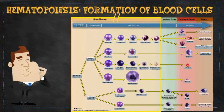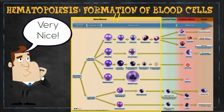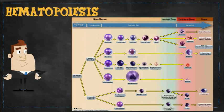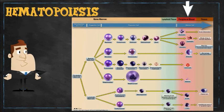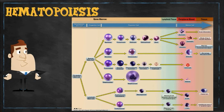All hematopoiesis starts in the bone marrow, as depicted in this diagram. The ultimate goal is to give rise to many of the cellular blood elements, such as neutrophils, eosinophils, basophils, monocytes, red blood cells, platelets, and the lymphocytes, which include B cells, T cells, and NK cells.